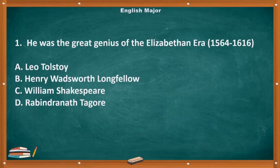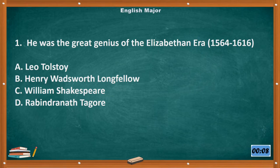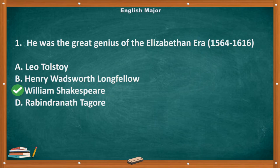Question number 1. He was the great genius of the Elizabethan era, 1564–1616. A. Leo Tolstoy. B. Henry Wadsworth Longfellow. C. William Shakespeare. D. Rabindranath Tagore. The correct answer is letter C, William Shakespeare.